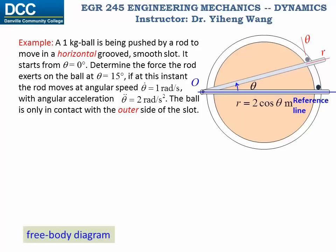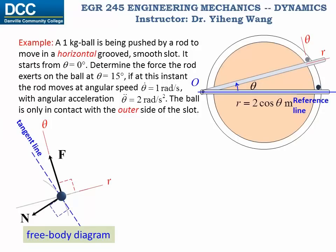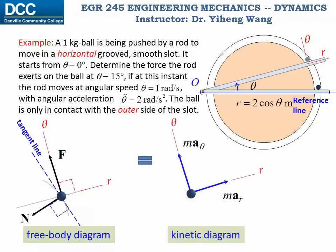Now we're ready to draw the free body diagram of the ball at this instant. It is subjected to the force exerted by the rod, which is perpendicular to the rod and therefore already in the transverse direction. It is also subjected to the force exerted by the slot. Because the ball is only in contact with the outer side of the slot, the normal force is normal to this path, perpendicular to the tangent line, pointing in this direction. Since we are only considering the horizontal plane, we do not need to consider the weight force. We also draw a kinetic diagram showing the acceleration components along the r and theta directions.